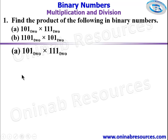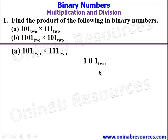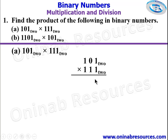So we start with part A of the problem. We're going to use expanded multiplication. So we have 101 times 111 in block form. We start with this 1 as the multiplier: 1 times 1 gives 1, 1 times 0 gives 0, 1 times 1 gives 1.